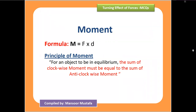The first part of this chapter is the turning effect or moment. Let's have a recap: what is moment, how to calculate moment, and what is the concept of principle of moment. Moment is the turning effect produced in an object, represented by M, and the formula is force multiplied by distance. According to the principle of moment, for an object to be in equilibrium, the sum of clockwise moments must be equal to the sum of anti-clockwise moments.